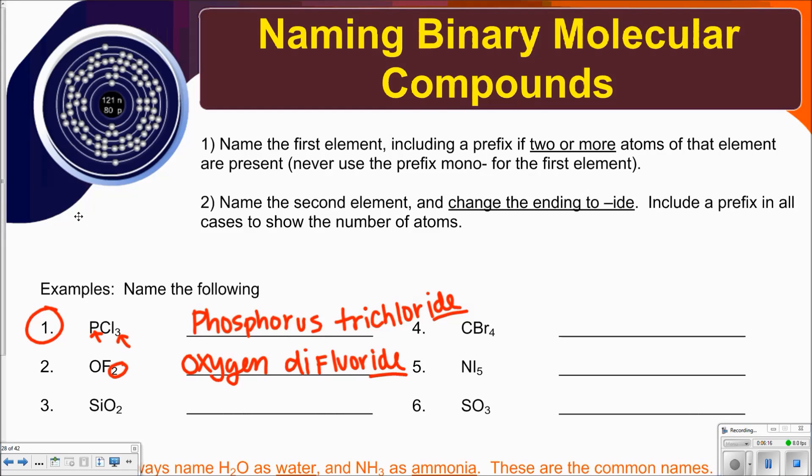And I'm going to skip and I'm going to do number five really quickly. Nitrogen, and then five iodide. So it's nitrogen, and then since it's five, the prefix for that is penta, and then iodide. Again, go ahead and pause the video and see if you can do the three that I didn't do.